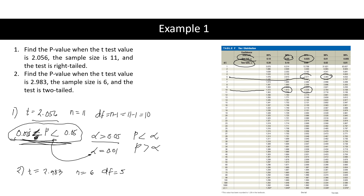Since we are using a two-tailed test, we refer to the two-tail row. The corresponding alpha values are 0.05 and 0.02. Therefore, the p-value is greater than 0.02 but less than 0.05.